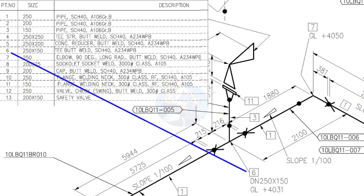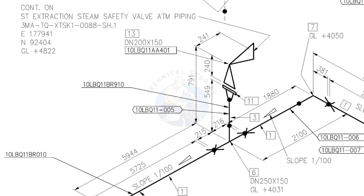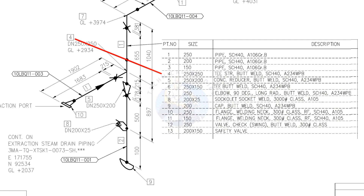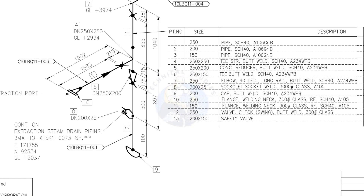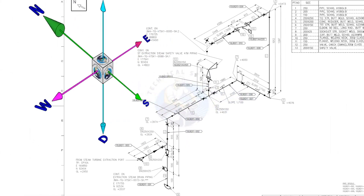Item number 6 is a reducing T. See what is item number 13 — it is a safety relief valve. Being familiar with valve symbols will be a big advantage for you. See item number 4 — straight T. Item number 5 is a concentric reducer. Item number 8 is a socket weld branch. Item number 9 is a cap.